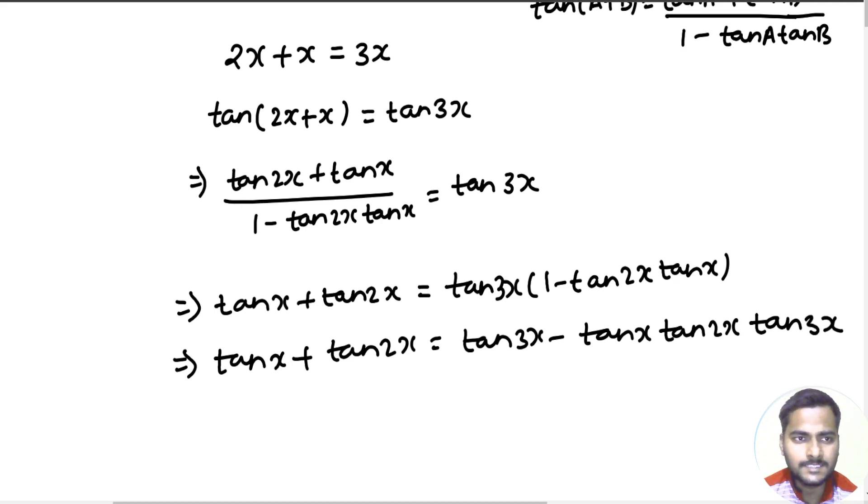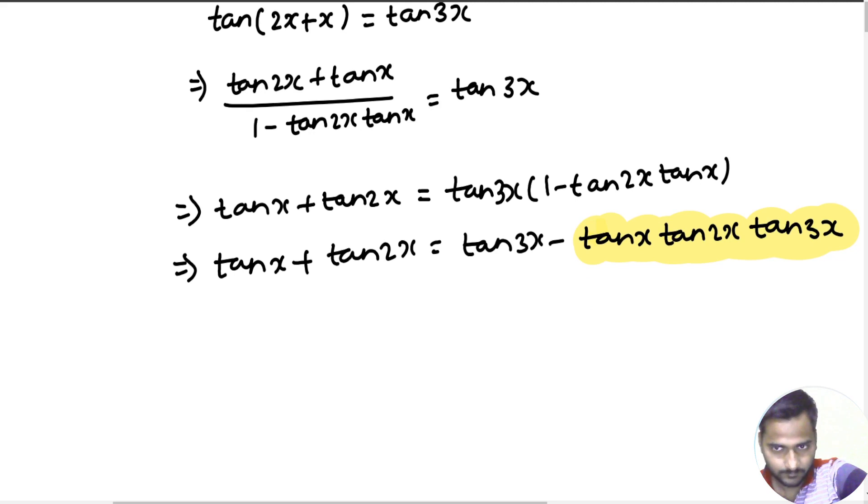Now this is what we need. So let's take this to the left side and bring the other two terms to the right side. So you are getting tan x tan 2x tan 3x being equal to tan 3x minus tan x minus tan 2x.